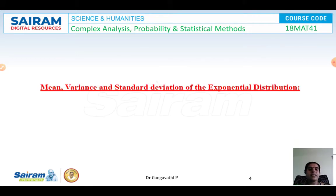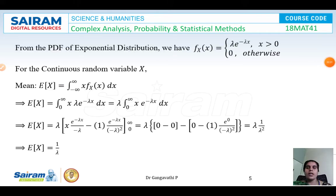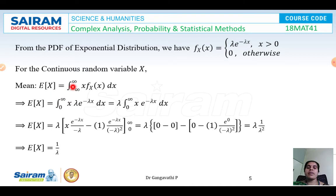Let us find the mean, variance, and standard deviation of the exponential distribution. For a continuous random variable, the expectation E[x] is defined as the integral from minus infinity to infinity of x * f(x) dx. Since f(x) exists only for x greater than 0, the limits become 0 to infinity, giving us the integral of x * lambda * e^(−lambda*x) dx.